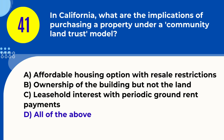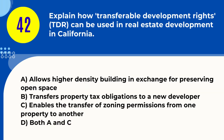Question 42. Explain how transferable development rights (TDR) can be used in real estate development in California. A. Allows higher density building in exchange for preserving open space B. Transfers property tax obligations to a new developer C. Enables the transfer of zoning permissions from one property to another D. Both A and C. Answer: D. Both A and C. Explanation: Transferable development rights allow for higher density development in exchange for preserving open spaces and can enable the transfer of zoning rights.